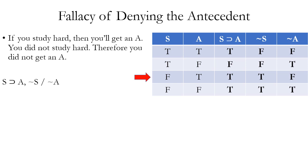There is a fallacy called denying the antecedent that resembles modus tollens but is invalid. Like modus tollens it starts with a conditional and has a negation as the other premise, but this negation negates the antecedent rather than the consequent — and that's enough to make it invalid. Ordinary language example: 'If you study hard, then you'll get an A. You did not study hard, therefore you did not get an A.' Row three of the truth table shows true premises and a false conclusion, proving this argument form is invalid.